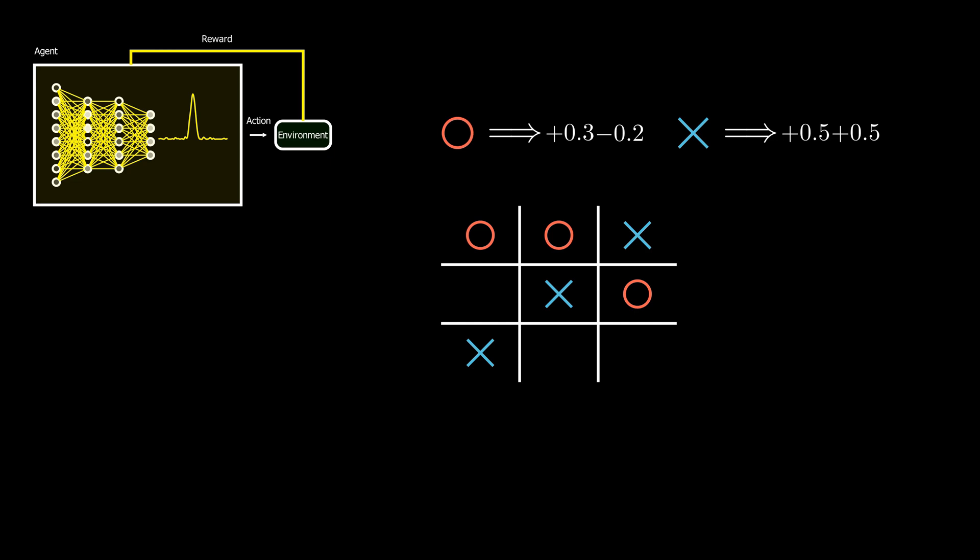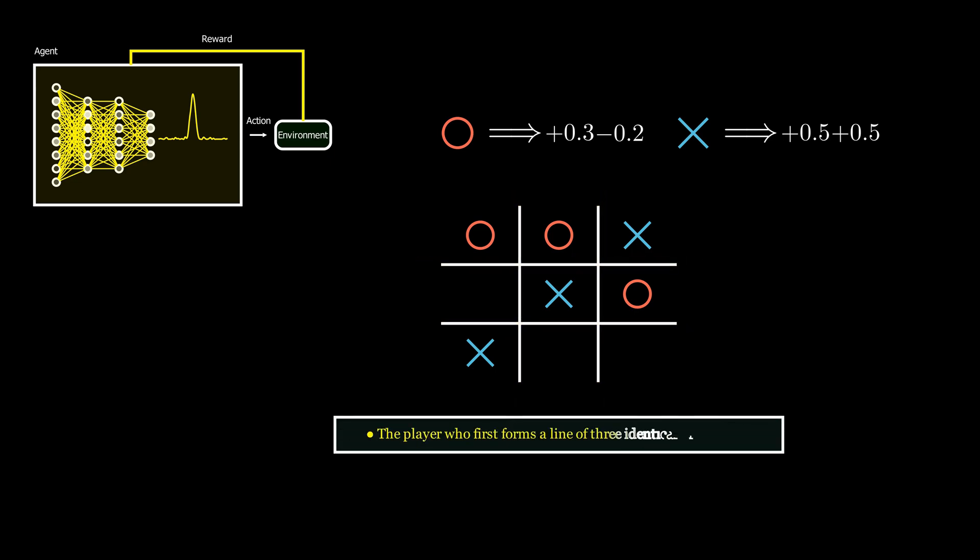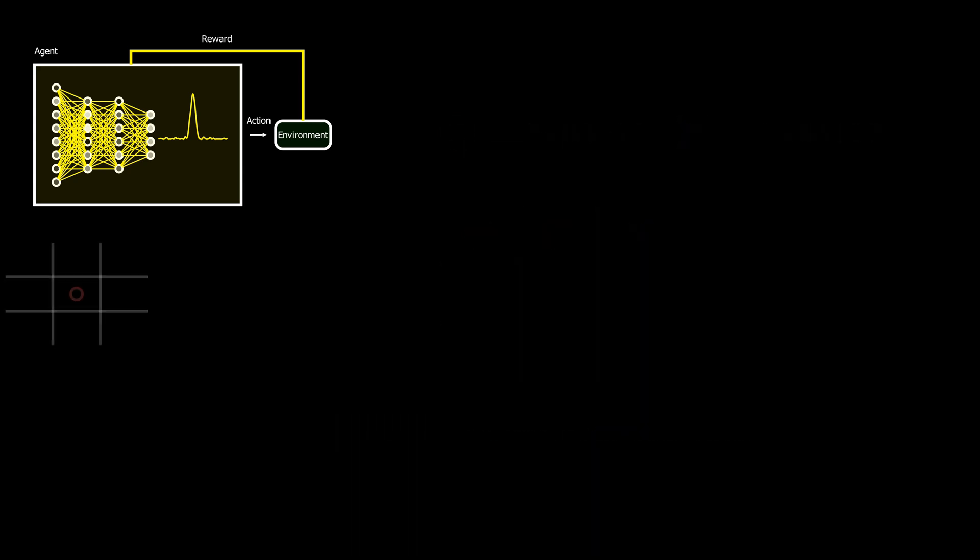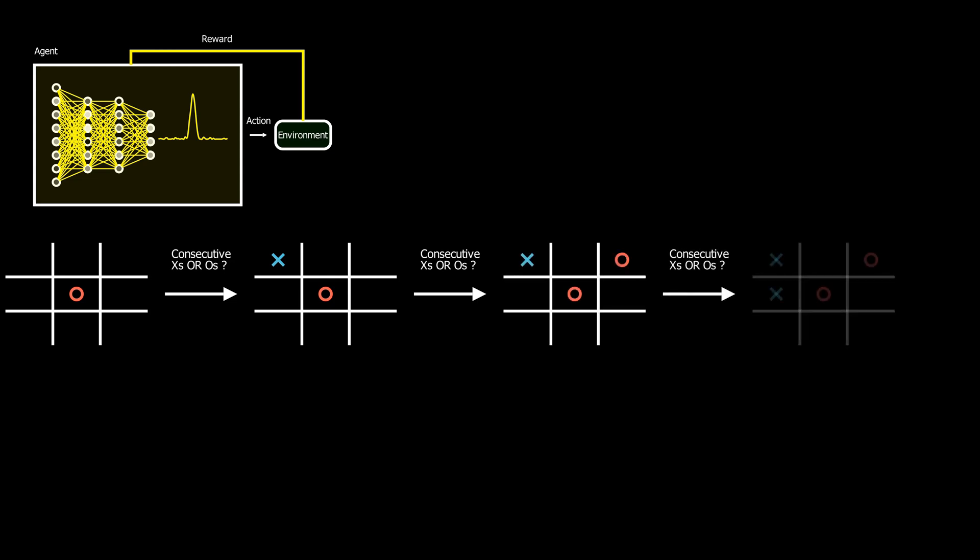The environment consists of the game board and the rules that govern how the game is played. It updates the state based on the agent's actions and determines whether the game has ended or should continue. By interacting with the environment, the agent learns to improve its decision-making strategy over time, optimizing its moves to maximize the expected reward.